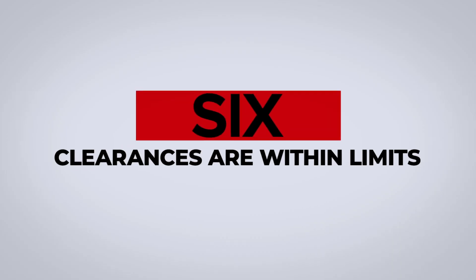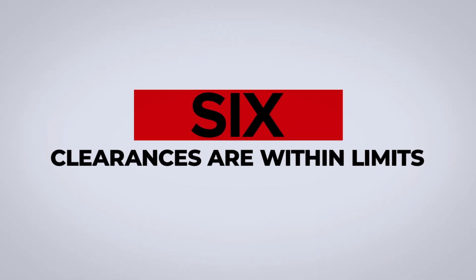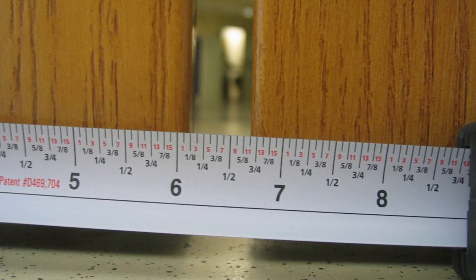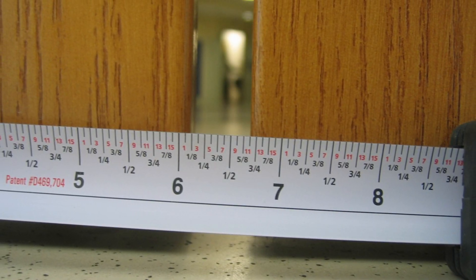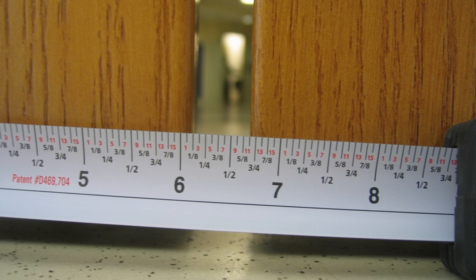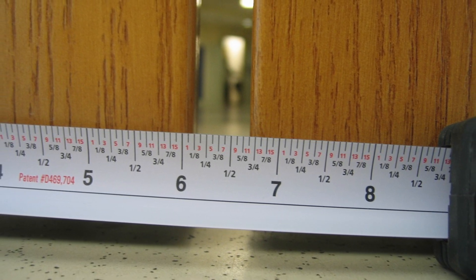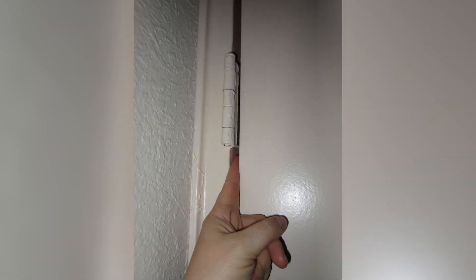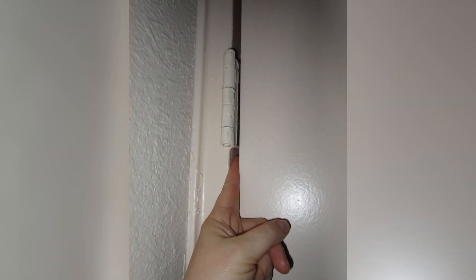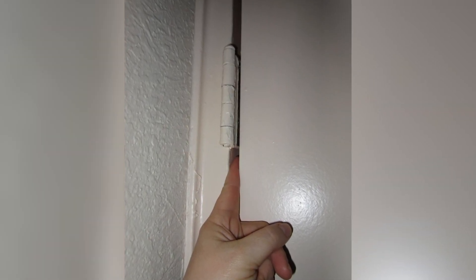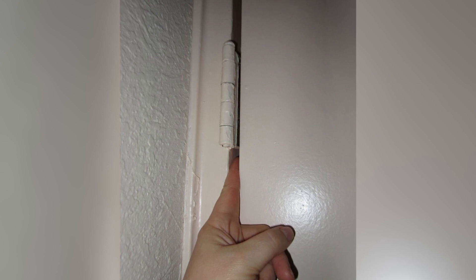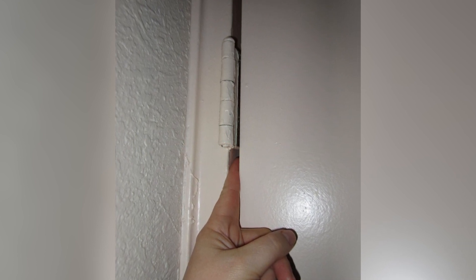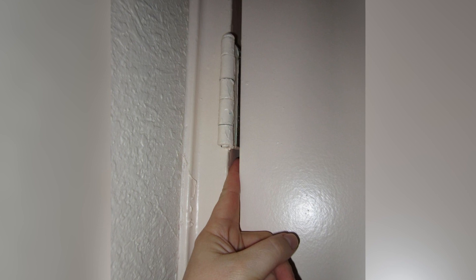Number 6: Door clearances are within allowable limits. The limitations of NFPA 80 apply to the installed conditions of the assembly. Manufacturing tolerances are not intended to be added to the maximum allowable clearance. Standard gasketing products are not likely to solve clearance problems. To address excessive clearance, products must be listed for use on openings with clearances in excess of what is allowed by the standard.